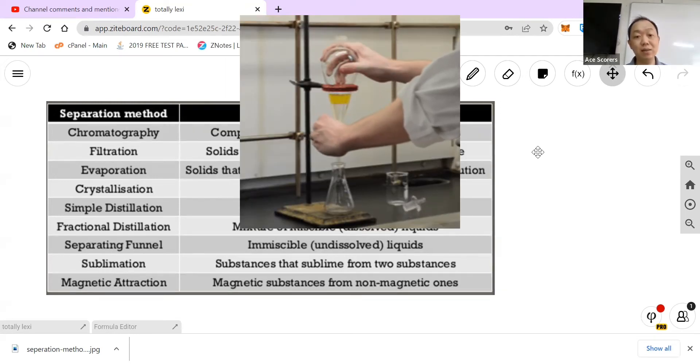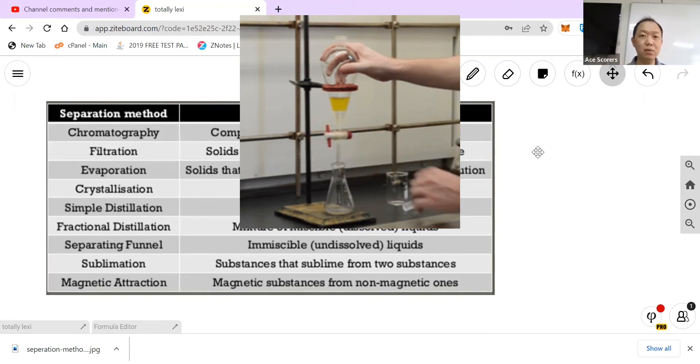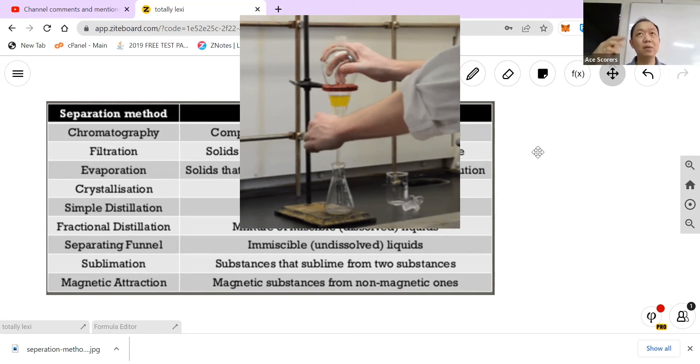Next, separating funnel: immiscible liquids. Basically, the two liquids cannot mix. So there will be a very distinct two layers. So you can basically open the tap and slowly let one of the layers come out and then you get another one. Next, sublimation: substances that sublime from two substances.